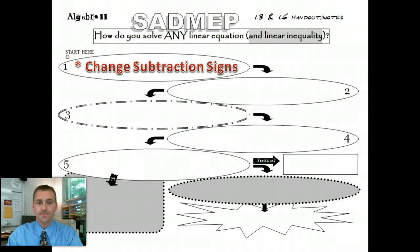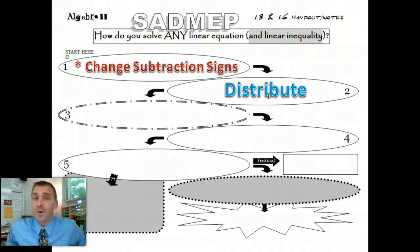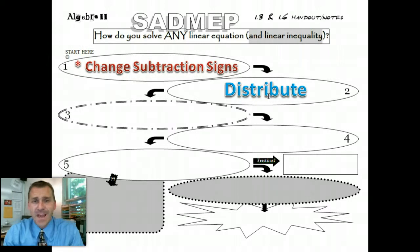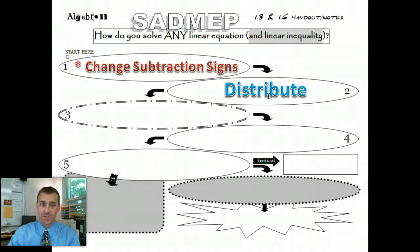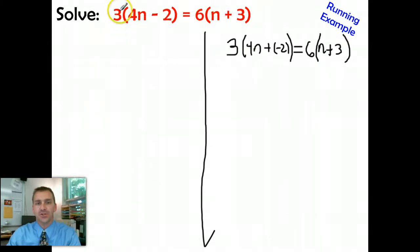Here's step number 2. This is not always necessary. The next thing that you have to look for is can I distribute anything? If so, do it. That is your next step. So in my running example, is there something here that I can distribute? Sure. I can take this 3 and distribute it there, and take this 3 and distribute it there. 6 I can distribute there, and the 6 I can distribute right there.